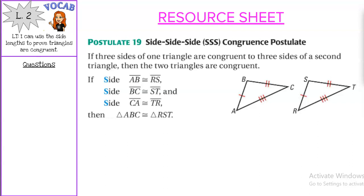We have our first congruence postulate, the side-side-side congruence postulate. To know that two triangles are congruent, you have to know that all three sides and all three angles are congruent to each other. In this unit we are going to learn shortcuts to proving triangles are congruent.